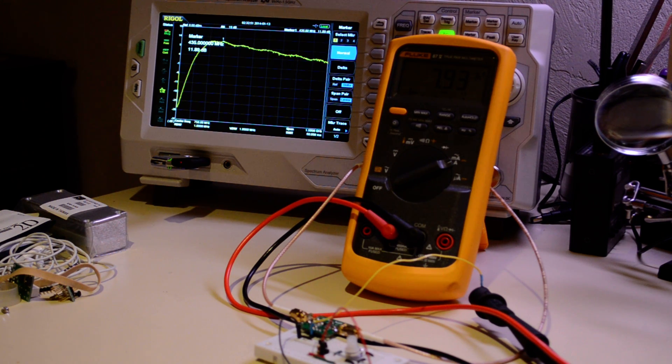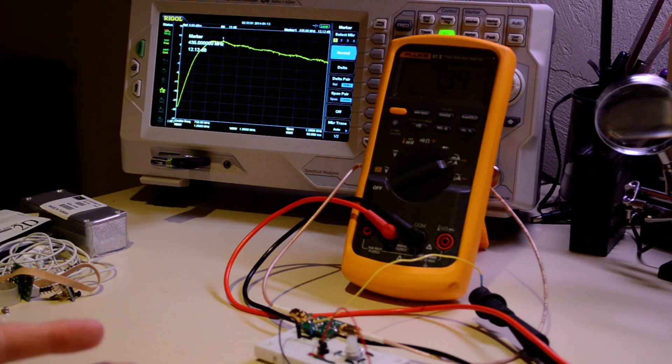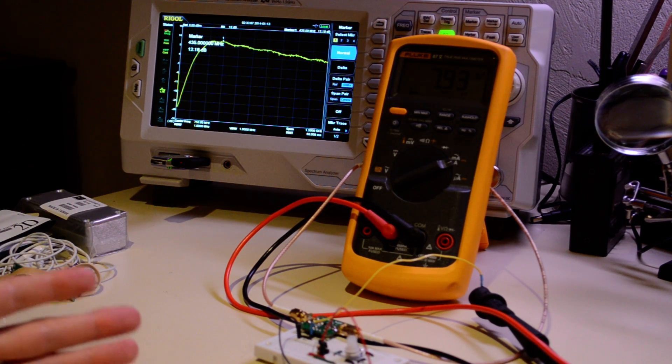Also, I've got 8 milliamps of current being consumed by the low noise amplifier. It should be about 6.5 according to the data sheet, so that's not really great either.